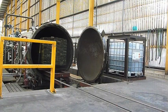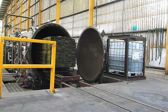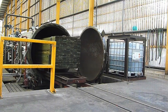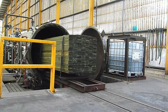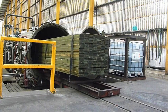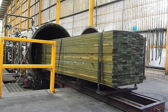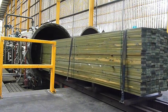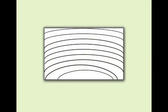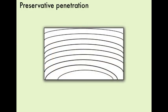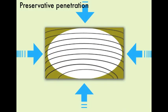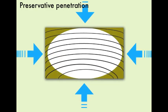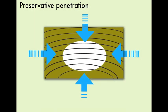High pressure treatments have the potential to achieve a high level of penetration of the preservative into the timber. The actual penetration will depend on the heartwood-sapwood ratio of the timber as well as the permeability of the species. For instance, a greater penetration will be achieved with a permeable species such as pine against a more resistant species such as spruce.